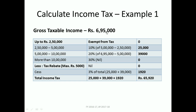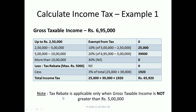The correct process is to apply slab rates progressively. Up to two lakh fifty thousand — no tax. From two lakh fifty thousand to five lakh — ten percent on the difference, which is twenty five thousand. From five lakh to six lakh ninety five thousand — twenty percent on one lakh ninety five thousand, which comes to thirty nine thousand. More than ten lakh — not applicable here, so zero. Total tax is sixty four thousand.